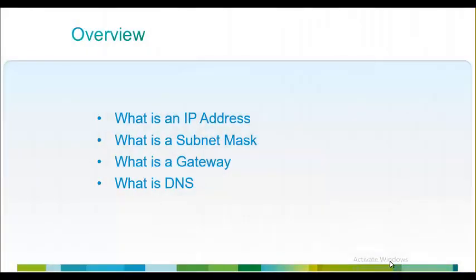IP is a protocol that works in Layer 3 of the OSI model. Its job is to find and identify a device, for which it uses numerical numbers — specifically binary 32-bit values. We call it an IP address because the IP protocol uses a 32-bit value to identify any device or node in the network.